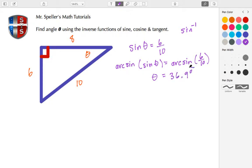36.9 degrees is what we're saying theta is. Now let's do the same thing, but let's use a different trig function. Let's go ahead and use cosine. So if we take the cosine of theta, well, cosine is the adjacent over the hypotenuse, so that's going to be 8 over 10. And we're going to use the inverse function of cosine, which is arc cosine, and we're going to take the arc cosine of both sides.